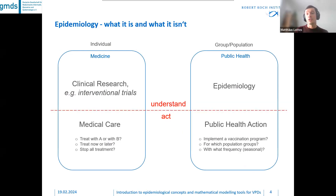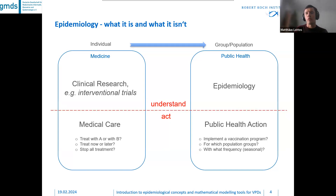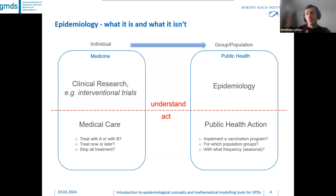Epidemiology is not about individuals or estimating individual effects — it operates at the group or population level. Compared to medicine or clinical research, epidemiology serves as a cornerstone for public health. We as epidemiologists try to understand what is going on in defined populations. In medical care, typical questions involve whether to treat a patient with treatment A or B, to treat them now or later, or even to stop treatment altogether.